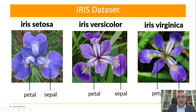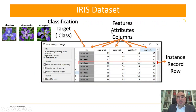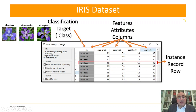We talked about having four attributes in the iris dataset, and we have instances or records. As you can see, we have 150 records in the dataset, four features, and the target classification which is the class: either Setosa, Versicolor, or Virginica.